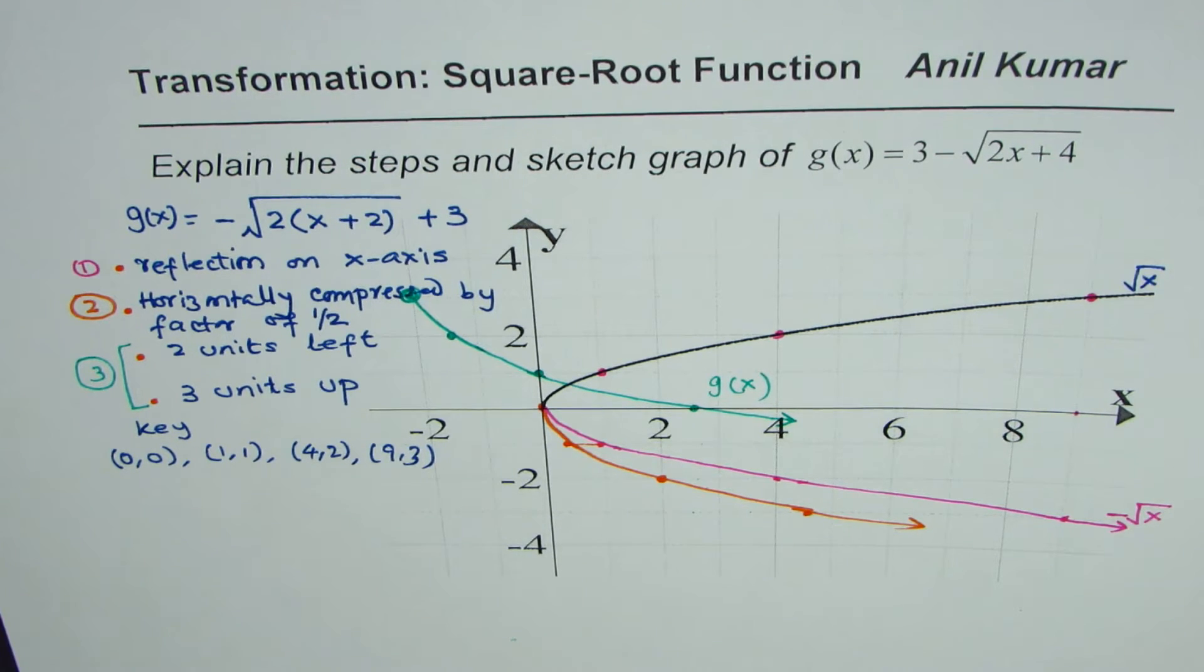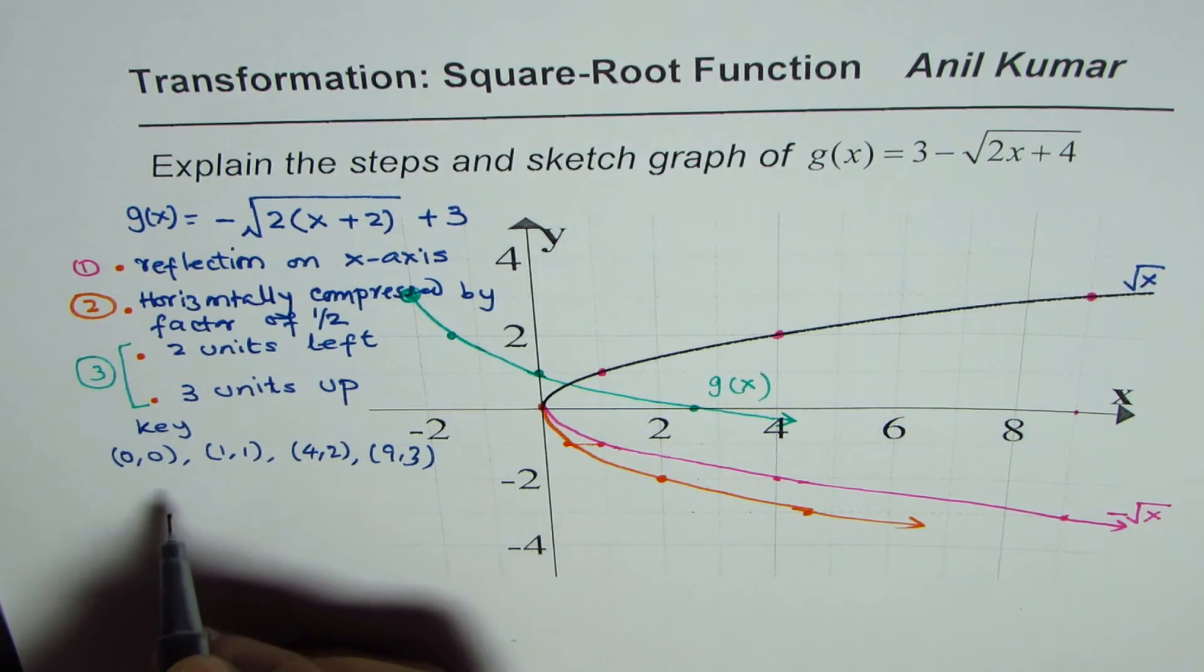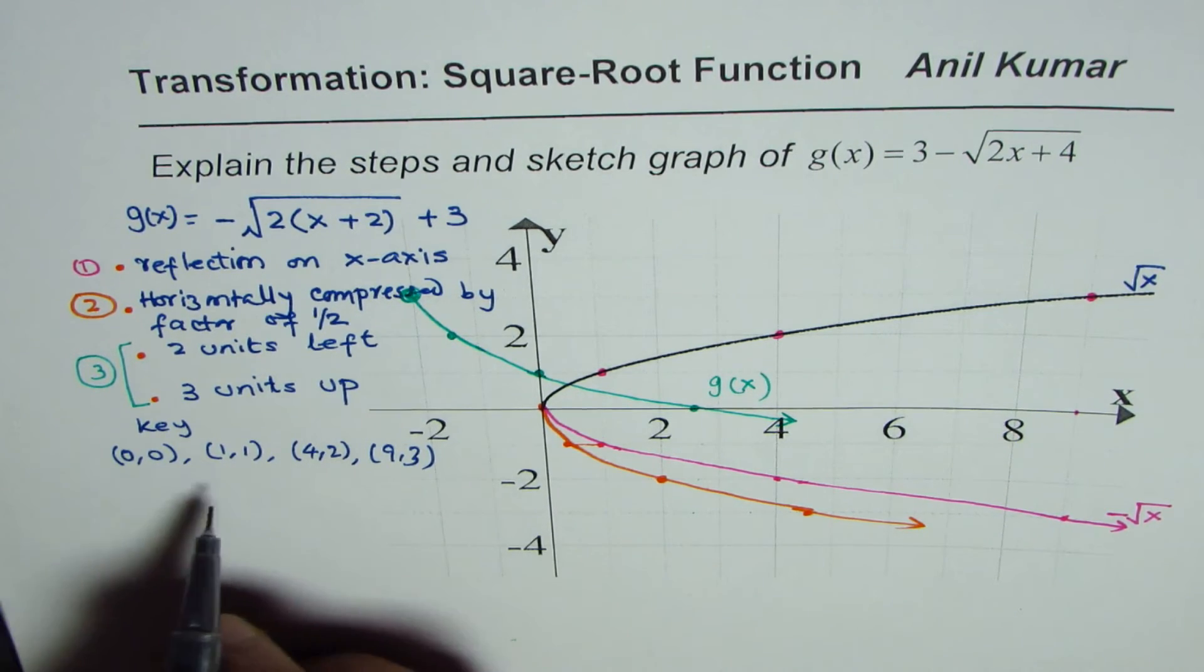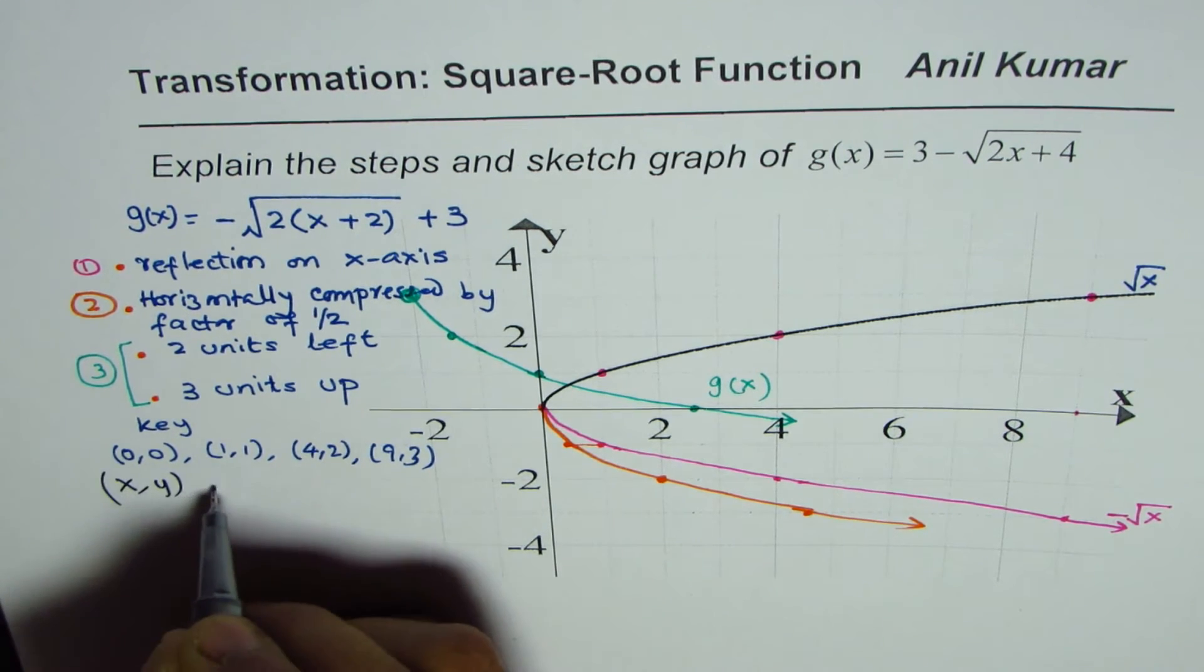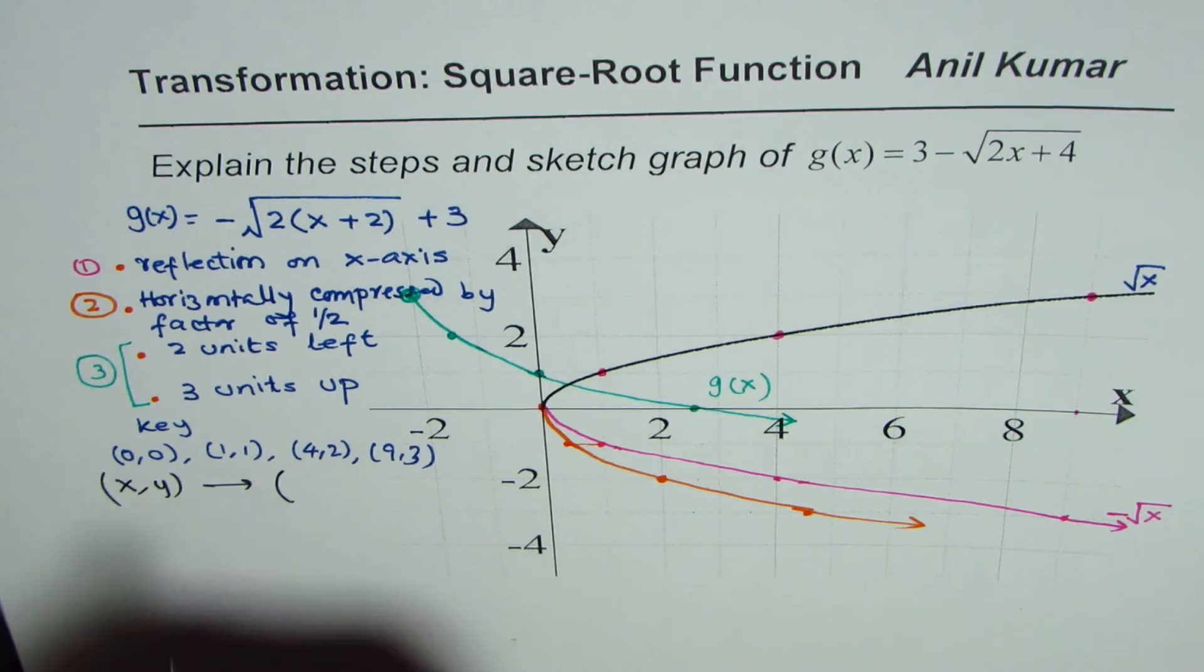So that is how you could easily sketch the graph. Now the second method is to write down the image points and then plot those points together. Now in this case the key points will get transformed with this transformation. The (x,y) coordinates will get changed to...